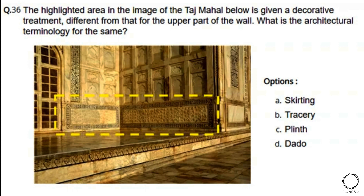Moving on to architecture vocabulary: The highlighted area in the image of the Taj Mahal is given a decorative treatment different from the upper part of the wall. What is the architectural terminology for this? Options: a) skirting, b) treasury, c) plinth, d) dado. The right answer is option D — dado. In architecture, the dado is the lower part of the wall below waist level, between the dado rail and above the skirting board.